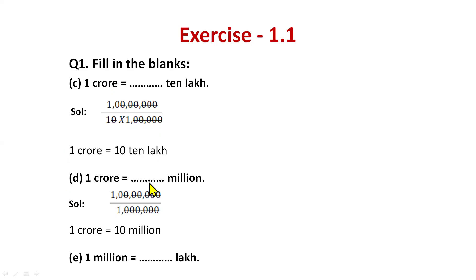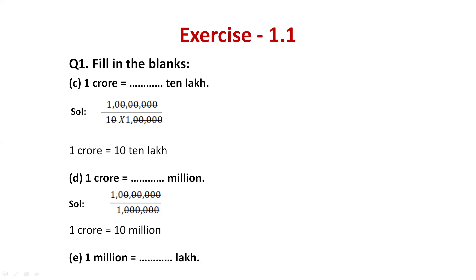Part (d): 1 crore equals how many millions? Write 1 crore as numerator and 1 million as denominator, cancel the zeros, and you're left with 10. So 1 crore equals 10 million. Now it's your turn — do part (e), pause the video and solve it, and write your answer in the comment section.